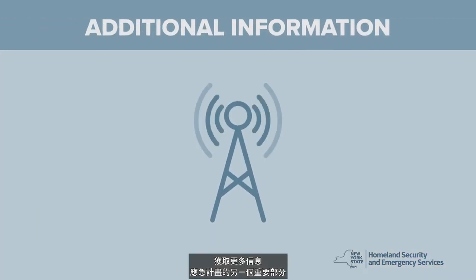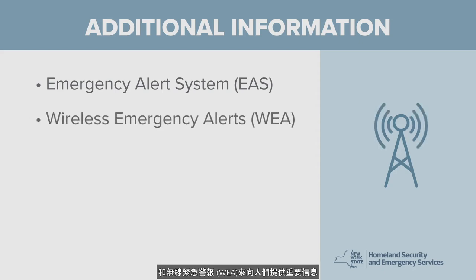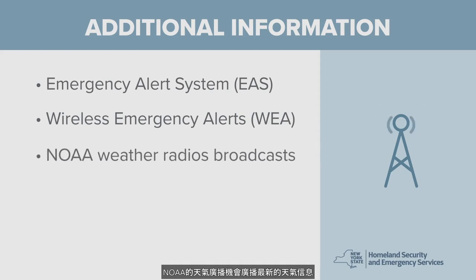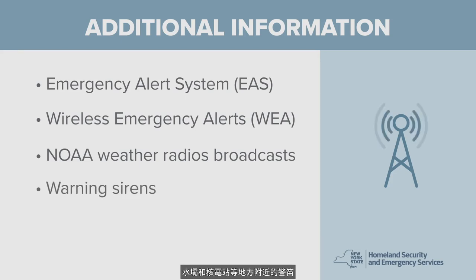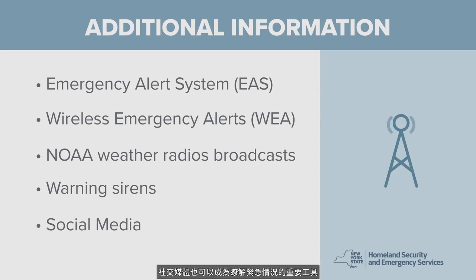Another important part of emergency planning is knowing where to get information. New York State uses the Emergency Alert System, or EAS, and Wireless Emergency Alerts, or WEA, to provide critical information to people in an emergency. NOAA weather radios broadcast up-to-the-minute weather information, so it's good to have one on hand. Warning sirens near places such as dams and nuclear power plants are designed to alert nearby residents of emergencies involving those facilities. And social media can again be an important tool for learning more about an emergency.